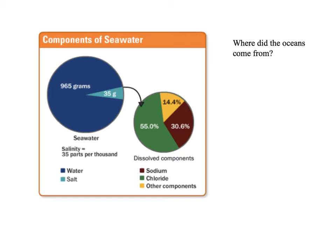Let's explore the components of seawater. In this first pie chart, what we'll notice is if we take a thousand grams — a kilogram of seawater — 35 grams is going to be not water. The other 965 grams are going to be water. So that gives us a total of 35 parts per thousand, which is what we register salinity as being.